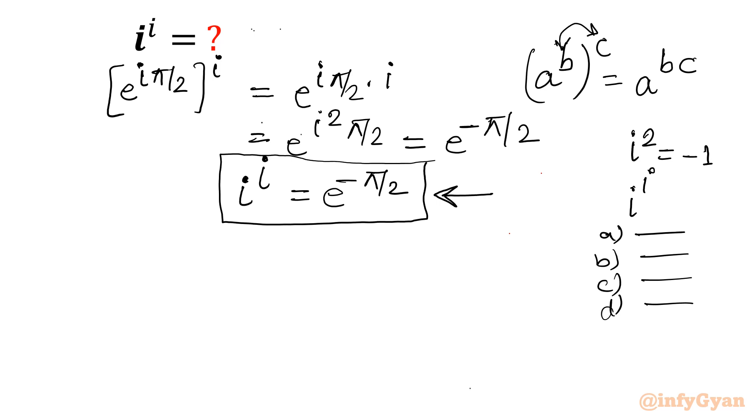Cosh x is (e^x + e^(-x))/2. And similarly sinh x is equal to (e^x - e^(-x))/2.